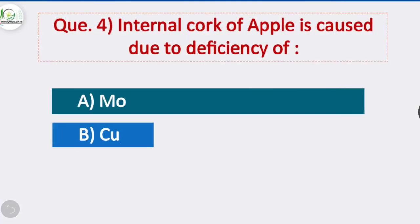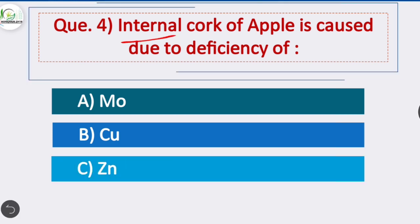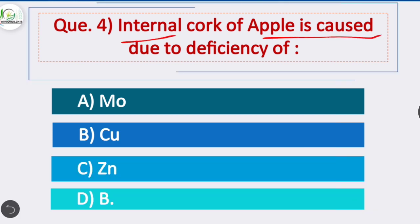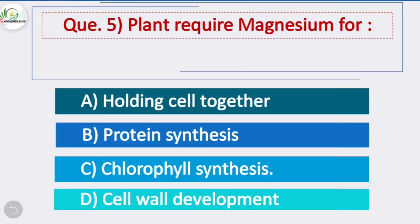Question 4: Internal cork of apple is caused by deficiency of — option D is correct — due to boron deficiency, internal cork of apple is caused. Question 5: Plants require magnesium for — option C is correct — plants require magnesium for chlorophyll synthesis.